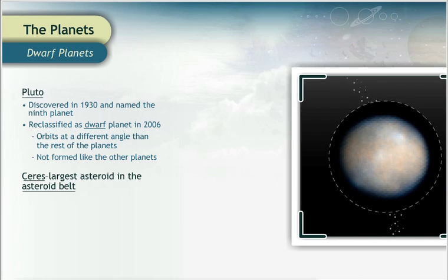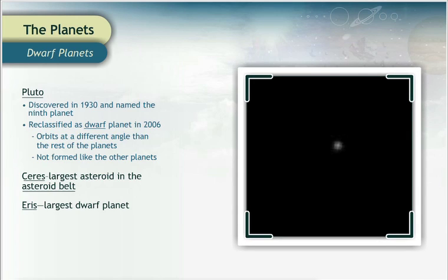The third dwarf planet is Eris. It's much farther away from the Sun than Pluto, but scientists estimate that it is much larger than Pluto or Ceres.